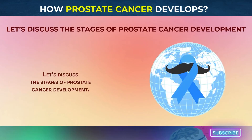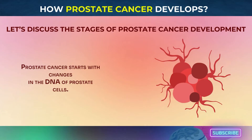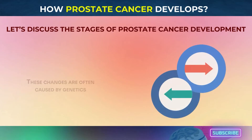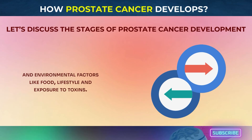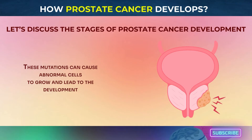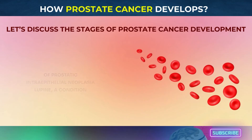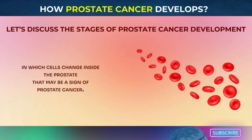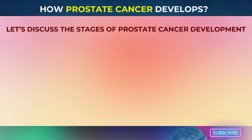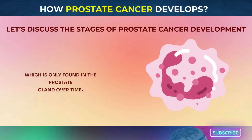Prostate cancer starts with changes in the DNA of prostate cells. These changes are often caused by genetics and environmental factors like food, lifestyle, and exposure to toxins. These mutations can cause abnormal cells to grow and lead to the development of prostatic intraepithelial neoplasia, PIN, a condition in which cells change inside the prostate that may be a sign of prostate cancer. These cells may turn into localized cancer, which is only found in the prostate gland over time.